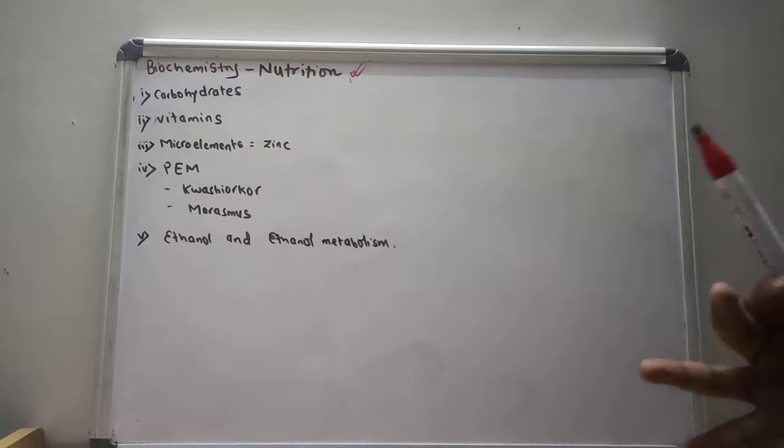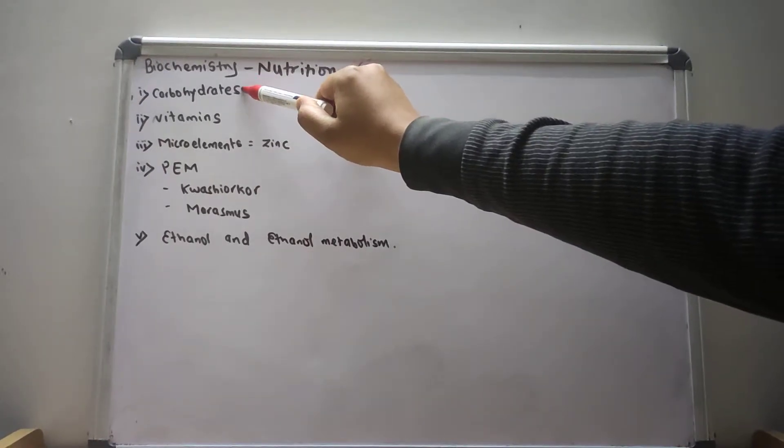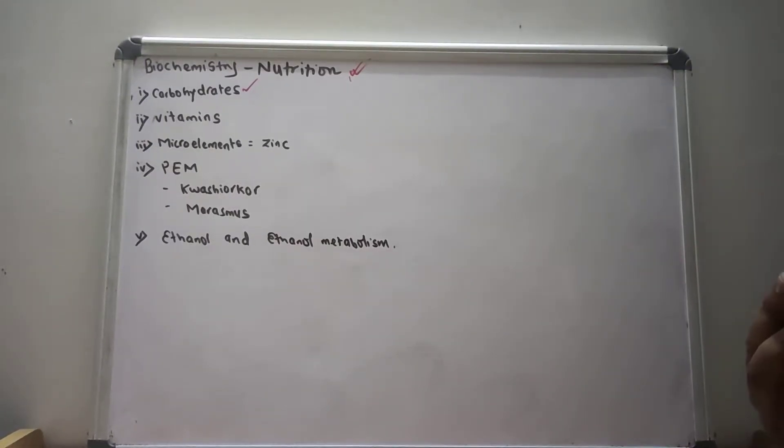There are mainly five topics you should know and should never miss in biochemistry nutrition. The first is carbohydrates. In carbohydrates, we will read briefly about the definition of carbohydrate and various classifications of carbohydrates.